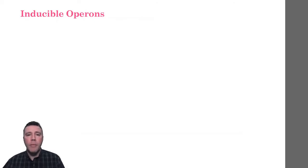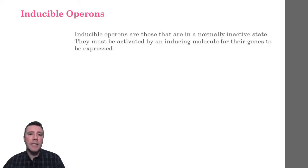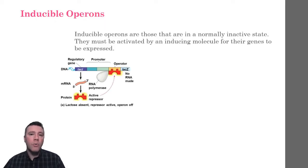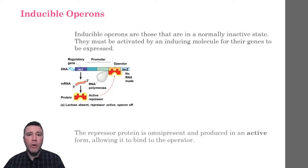There are two primary types of operons: inducible and repressible operons. An inducible operon is usually off, but can be stimulated when a specific molecule interacts with a regulatory or repressor protein. The most typical example of an inducible operon is the lac operon, lac being short for lactose. When lactose is absent, the repressor protein is active. The active conformation of the repressor protein allows it to bind to the operator, which prevents RNA polymerase from gaining access to the controlled genes whose protein products are involved with the utilization of lactose.